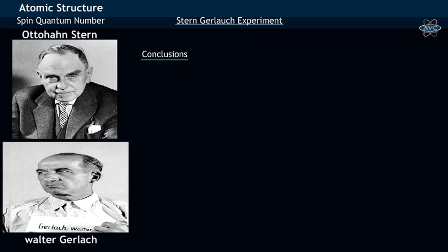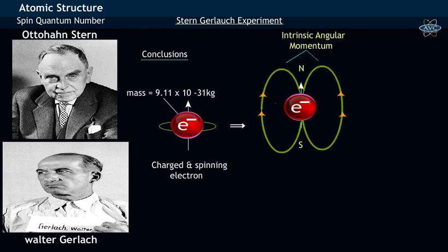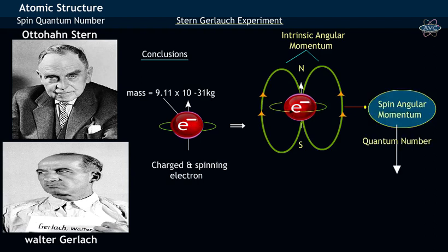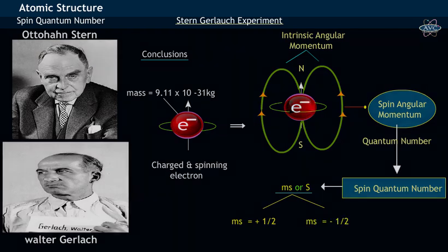From the experimental observations, Stern and Gerlach drew the following conclusions. A charged and spinning electron with specific mass generates an intrinsic angular momentum, which is called spin angular momentum. The quantum number which measures the spin angular momentum of an electron is called spin quantum number. Spin quantum number is represented by ms or capital S. ms takes two values: ms equals plus half and ms equals minus half.